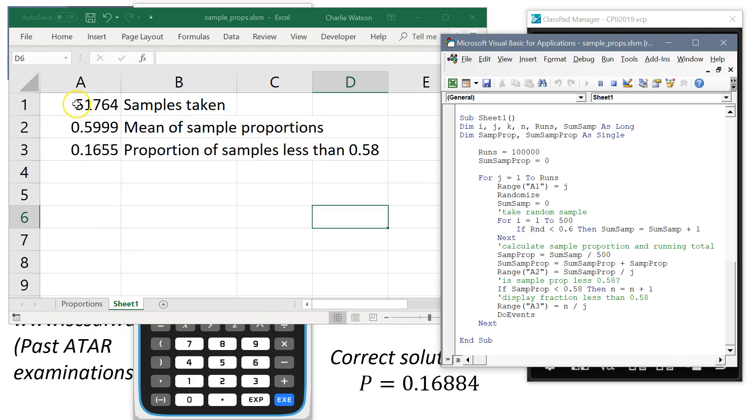We've just got over the halfway mark here. So you can see the mean of the 50,000 sample proportions at the moment is very close to 0.6. So it looks like our code is doing things properly. And the proportion of samples less than 0.58 is about 0.1668. It's getting closer and closer to the correct solution here. So let's come back in another 50,000 samples.